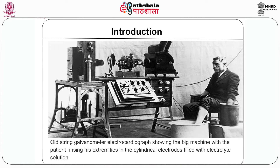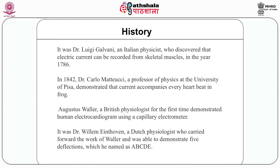Before we start this module on electrocardiography, let us see the origin of this wonderful device where medicine meets physics. It was Dr. Luigi Galvani, an Italian physicist, who discovered that electrical current can be recorded from skeletal muscle in 1786. Exactly 56 years later, in 1842, Dr. Carlo Mattei, a professor of physics at the University of Pisa, demonstrated that current accompanies every heartbeat in frog. Augustus Waller, a British physiologist, for the first time demonstrated the human electrocardiogram using a capillary electrometer. It was Dr. William Einthoven, a Dutch physiologist, who carried forward the work of Waller and was able to demonstrate five deflections, which he named ABCDE.